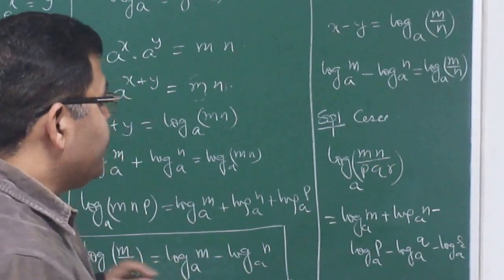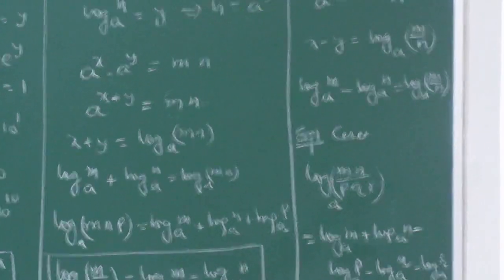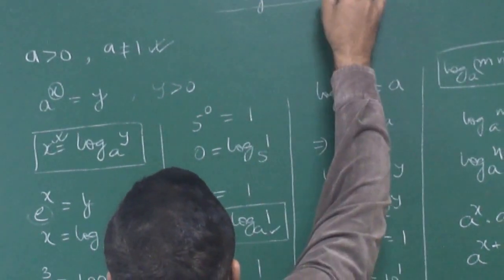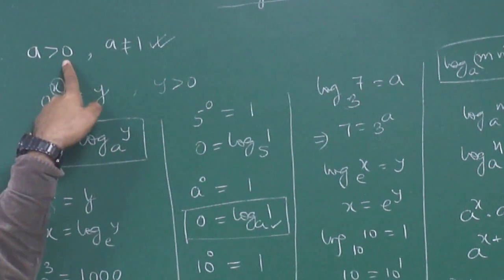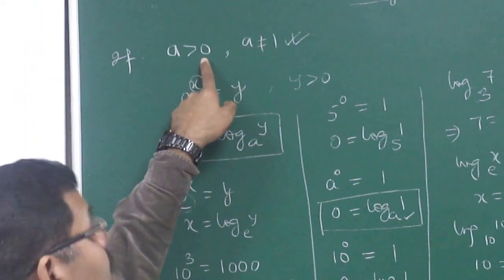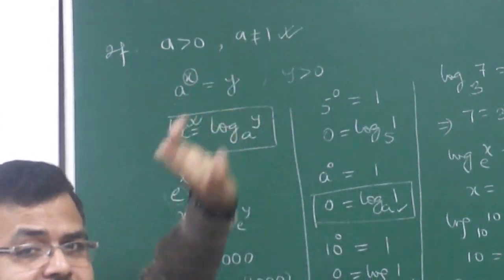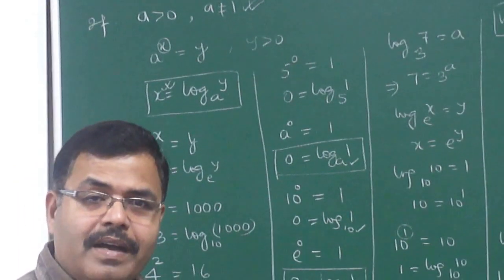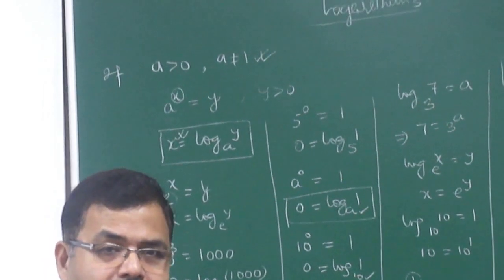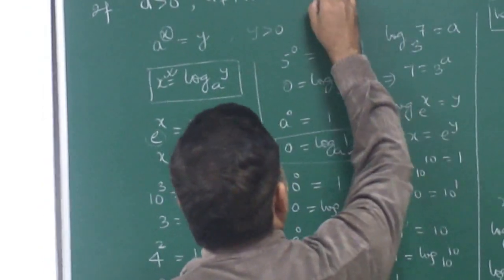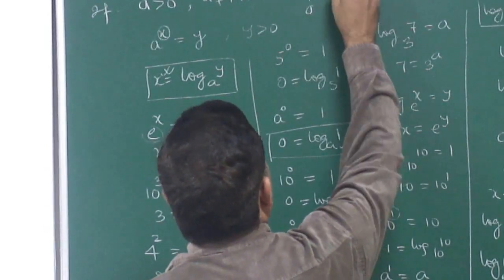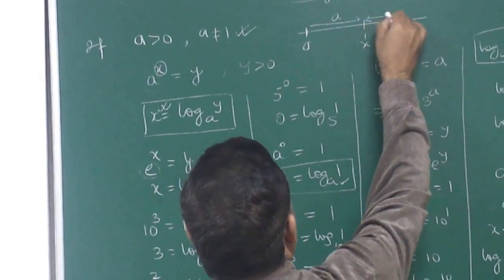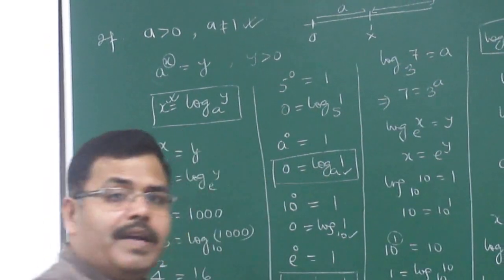Let us understand the basic concepts once more. The topic is logarithm. If a is greater than 0 and a is any positive number and a is not equal to 1, then two cases arise: a is between 0 and 1, or a is greater than 1 — because 1 is not allowed. Whether we're on the number line, a is positive, greater than 0, but not 1.